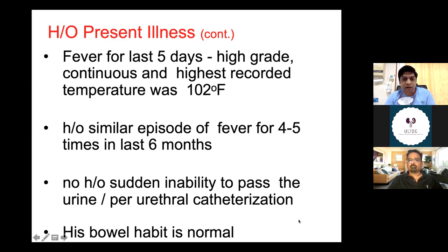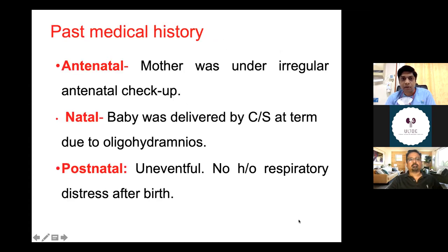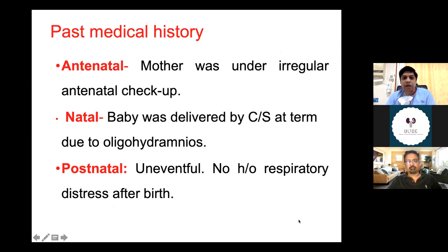She also gives a history of similar episodes of fever four to five times in the last six months, the details of which are not completely available. There is no history of sudden inability to pass urine or any history of prior catheterization, and the child has normal bowel habits. In the past medical history, the mother was on irregular antenatal checkup. The baby was delivered by LSCS at term due to oligohydramnios. The postnatal period was uneventful with no history of respiratory distress after birth.